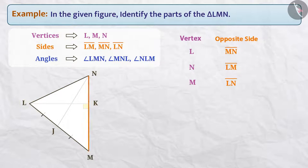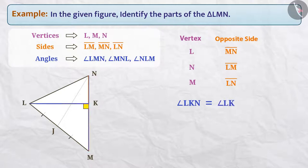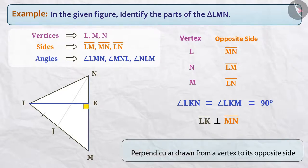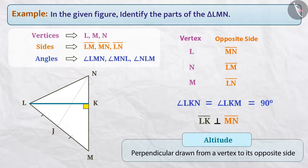The line segment LK is drawn on the opposite side MN from the vertex L. From the right-angle symbol, we get to know that angle LKN is equal to angle LKM, both equal to 90 degrees. That is, the line segment LK is perpendicular to the side MN of the triangle. A perpendicular drawn from a vertex to its opposite side is called an altitude of the triangle. In this way, LK is an altitude of triangle LMN.